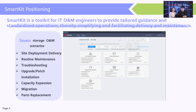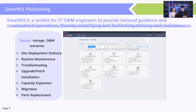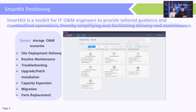SmartKit is a toolkit for IT O&M engineers. It can be considered a unified platform that provides O&M for IT products such as storage devices and servers, avoiding frequent switchover during routine O&M. It provides tailored guidance based on the summary of O&M scenarios, including seven scenarios for storage: site deployment delivery, routine maintenance, troubleshooting, upgrade or patch installation, capacity expansion, migration, and parts replacement. It supports standardized and wizard-based operations, reducing differences in O&M operations of engineers and implementing standardized product O&M.